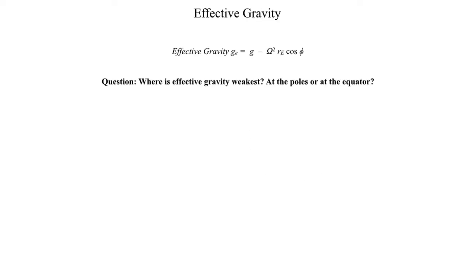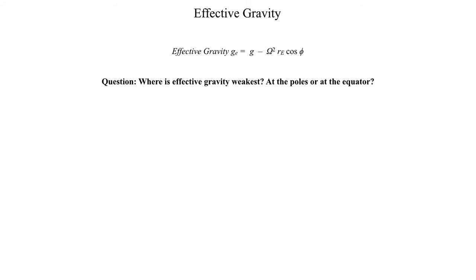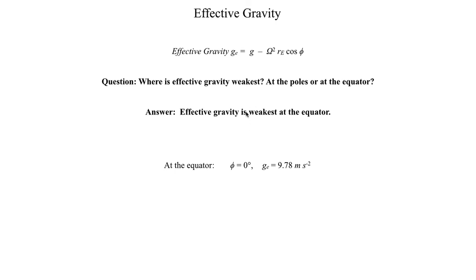I'll rewrite the equation and pose the following question — feel free to pause the video and answer for yourself to check your understanding. Where is effective gravity weakest: at the poles, or at the equator? The answer is that effective gravity is weakest at the equator. There are a couple of explanations, but I'll go with the mathematical one, which is more straightforward.